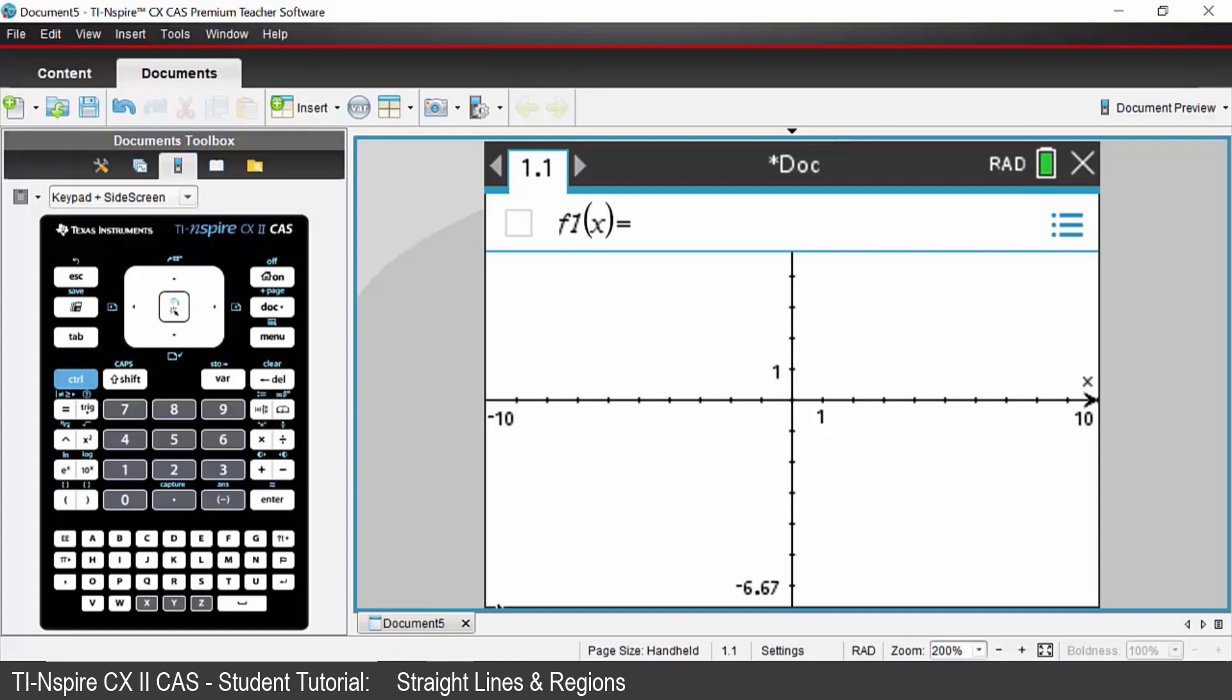We're going to plot the straight line y equals 2x plus 4, so we simply type in 2x add 4 and you get your straight line.